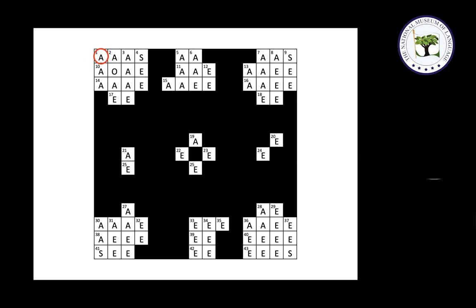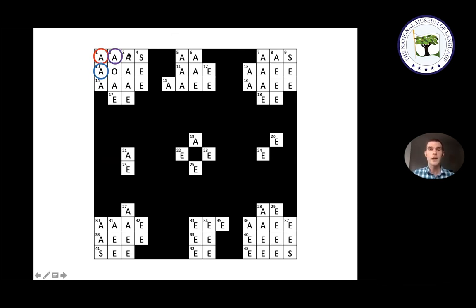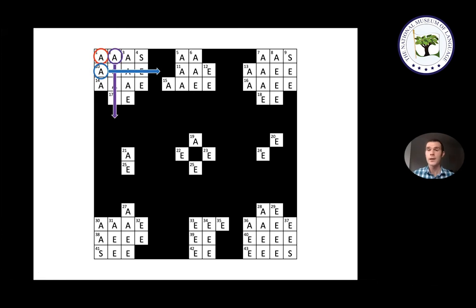Looking at all common first letters of English words and thinking about which can easily be followed by other common first letters — for instance, there are no English words starting with 'CS,' 'CC,' 'CP,' or 'CM,' and similarly 'P' can't easily be followed by 'S,' 'C,' 'P,' or 'M' — the only two of the most common first letters that can really easily be followed by the other common first letters are 'S' and 'A.' This helps explain why both 'S' and 'A' appear much more commonly in the top left corner of crosswords than their raw frequency as first letters of English words would predict.